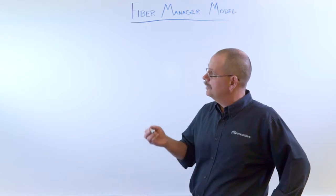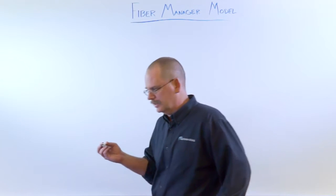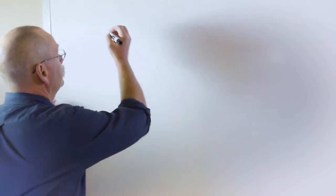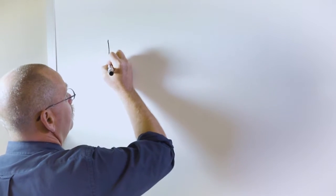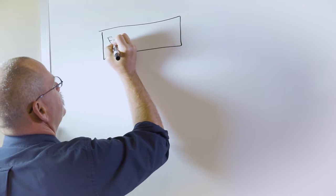So what we're going to do is we're going to start with the various feature classes and their related objects. Going up here to where we're going to pretty much use the entire board. The first feature class we're going to talk about is the fiber optic cable.